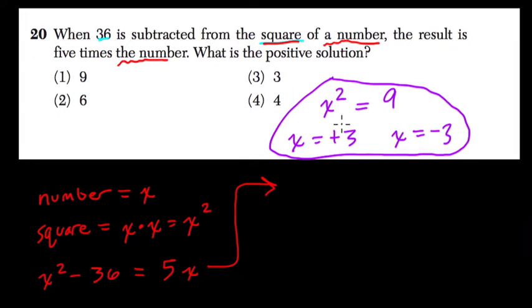And they're saying, pick the positive one only. So we have a quadratic here. I'm going to write it as, I'm going to subtract 5x from both sides. What will that give me? Well, it gives me x squared minus 5x minus 36.